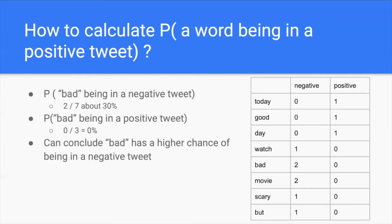Once the frequency dictionary is complete, we are able to calculate the probability of a keyword being in a positive or negative tweet. To calculate the probability of the word 'bad' being in a negative tweet, we find the number of times 'bad' is in the negative tweet — going to the bad row and negative column to find two — then divide by the total number of negative counts. Summing the entire negative column gives seven, so the probability is two out of seven, which is about 30%. The probability of 'bad' being in a positive tweet would be zero divided by three, which is zero.